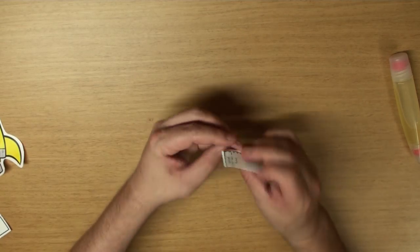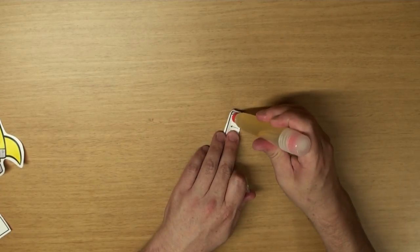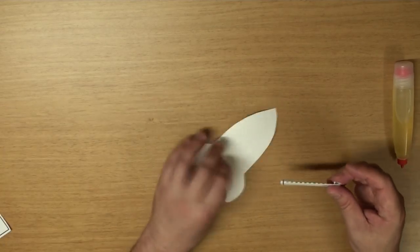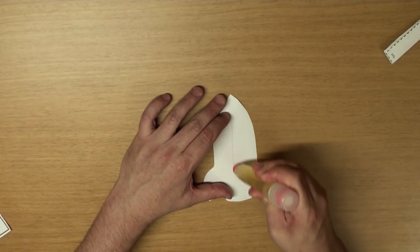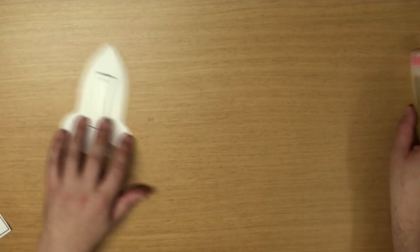Now the last part. Fold the top. And put some glue on that. And now we're ready to put it on the rocket. Put some glue in the middle of the rocket. And stick it on like that. Yeah!